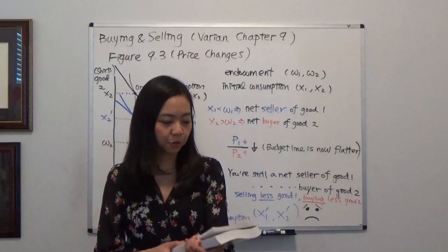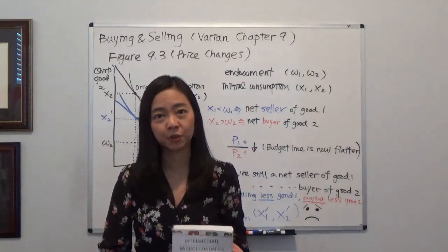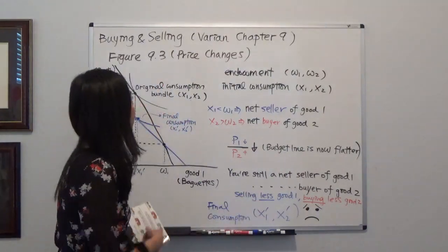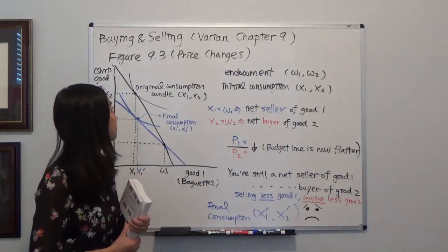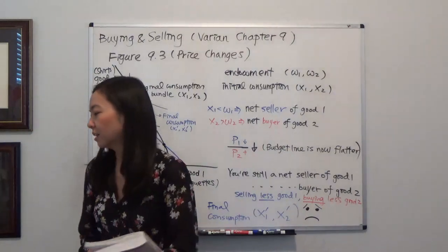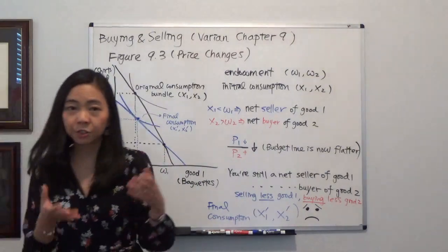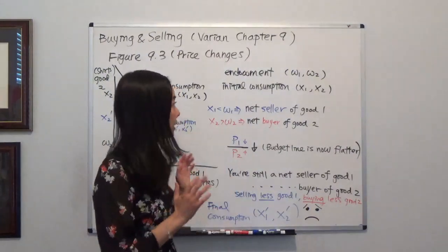In particular, I'm using Hall-Varian's Intermediate Microeconomics book and I'm going over Chapter 9. In this chapter, you have initial endowment, Omega 1 and Omega 2.